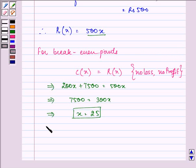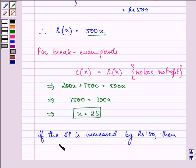So we can write that if the selling price is increased by Rs. 150, then the break-even point is when the firm is producing and selling 25 calculators daily.